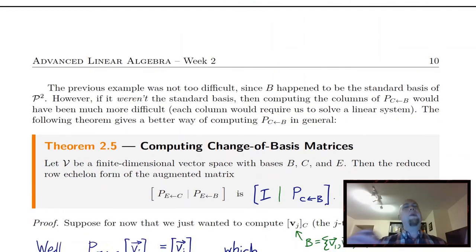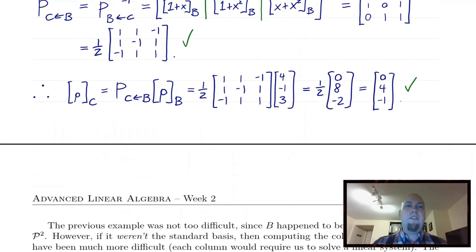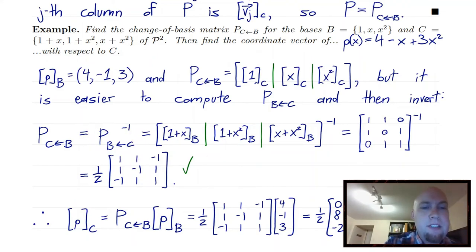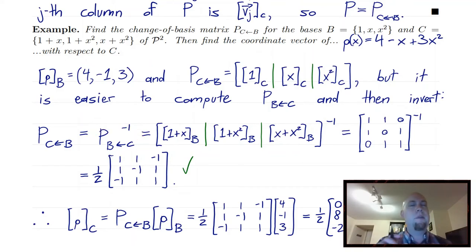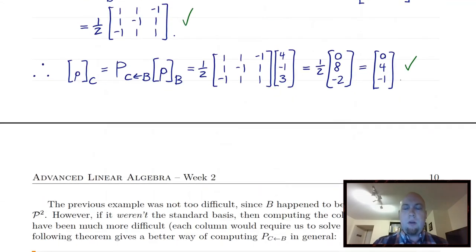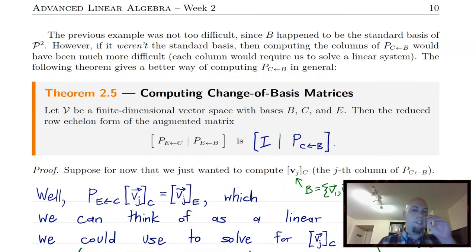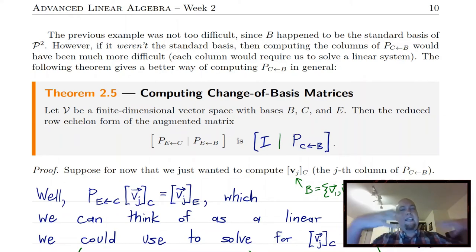The reason we used that inversion approach is that computing change of basis matrices into the standard basis is much easier — you can just read off coefficients. So computing change of basis matrices into the standard basis is easy. But what if you want to compute a change of basis matrix from one ugly basis to another ugly basis, with no standard basis in sight? The next theorem tells us probably the easiest way to do this.